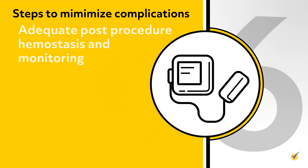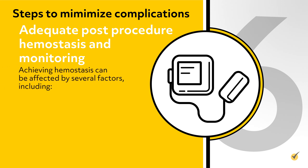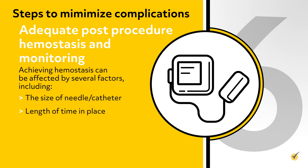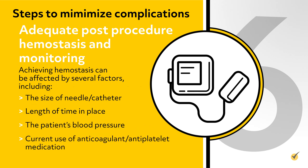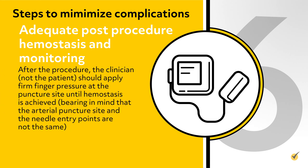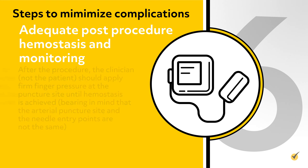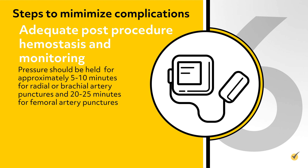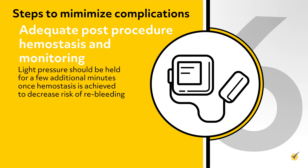Number six: adequate post-procedure hemostasis and monitoring. Achieving hemostasis can be affected by several factors, including the size of the needle and/or catheter, length of time in place, the patient's blood pressure, current use of anticoagulant/antiplatelet medication, and pre-existing coagulation disorders. After the procedure, the clinician — not the patient — should apply firm finger pressure at the puncture site until hemostasis is achieved, bearing in mind that the arterial puncture site and the needle entry points are not the same. Pressure should be held for approximately 5 to 10 minutes for radial or brachial artery punctures, and 20 to 25 minutes for femoral artery punctures. Light pressure should be held for a few additional minutes once hemostasis is achieved, to decrease risk of re-bleeding.